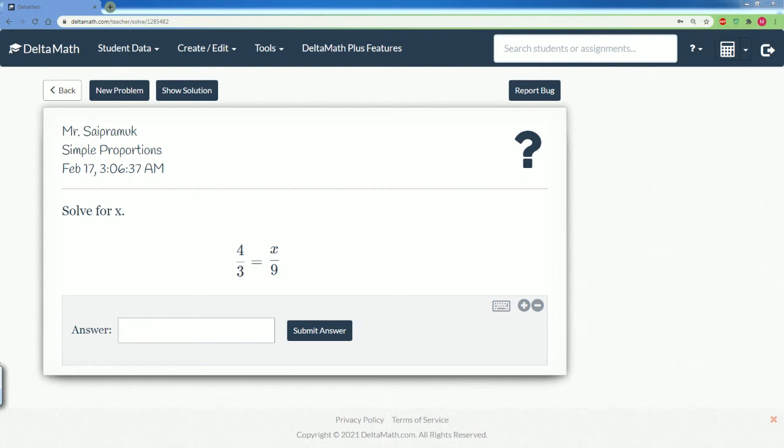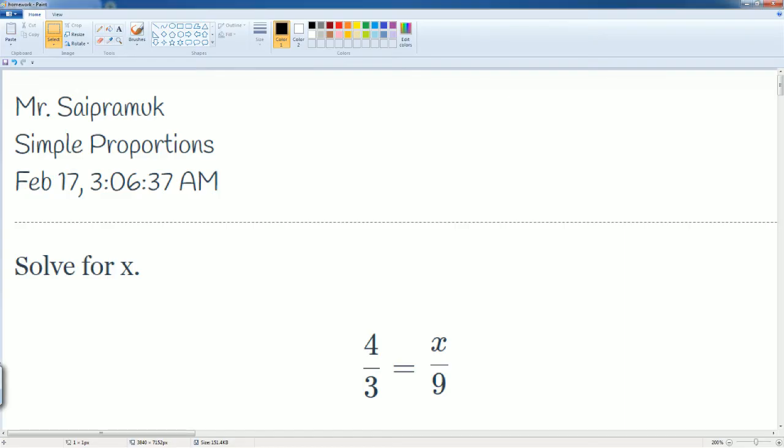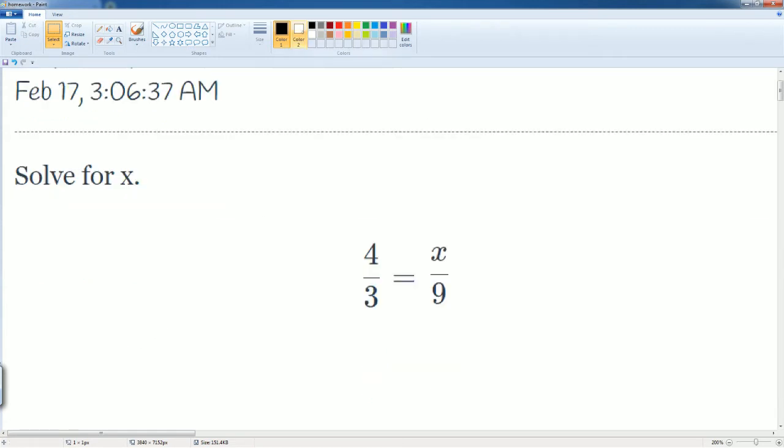Welcome to the Delta Math solution tutorial. Here we have simple proportions where you are asked to solve for x given this proportion. To solve any proportion, we have to cross multiply. The act of cross multiplying is when these two multiply together, that's a cross. So 4 times 9 is going to be the first one, then the second one is going to be 3 times x.